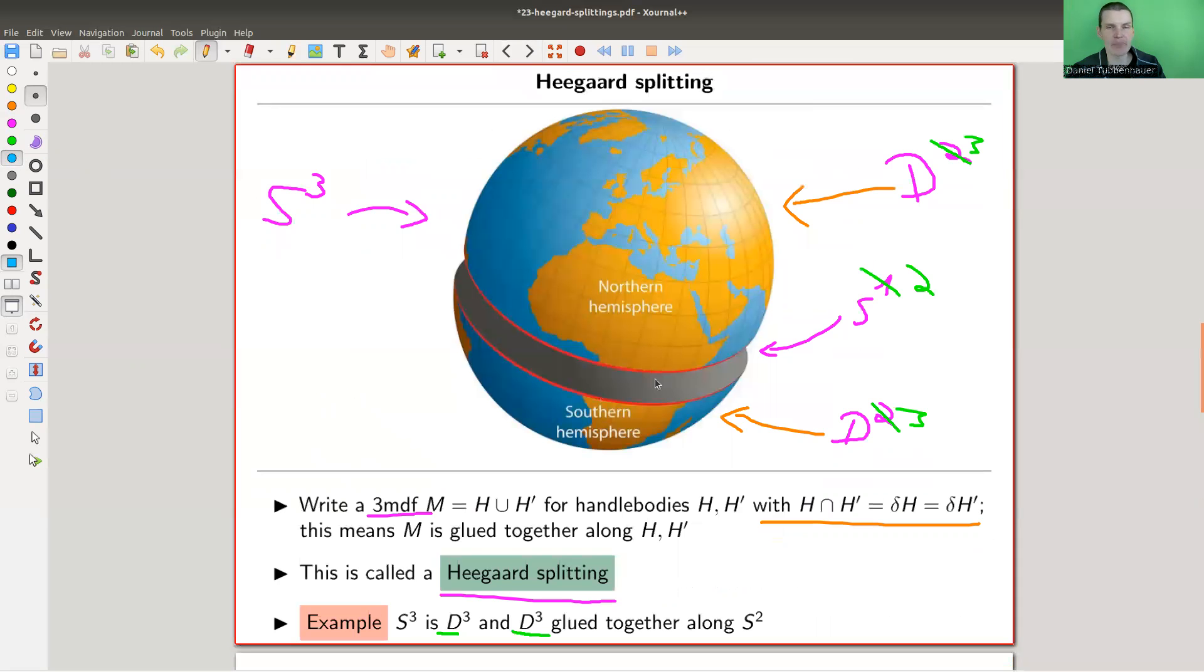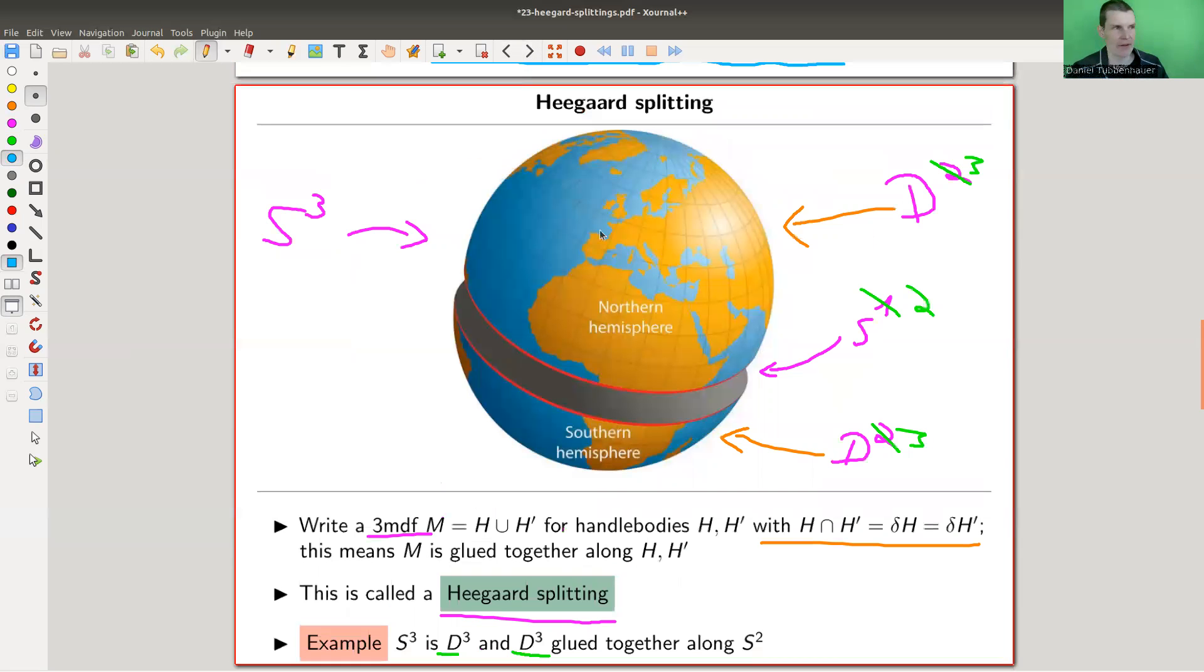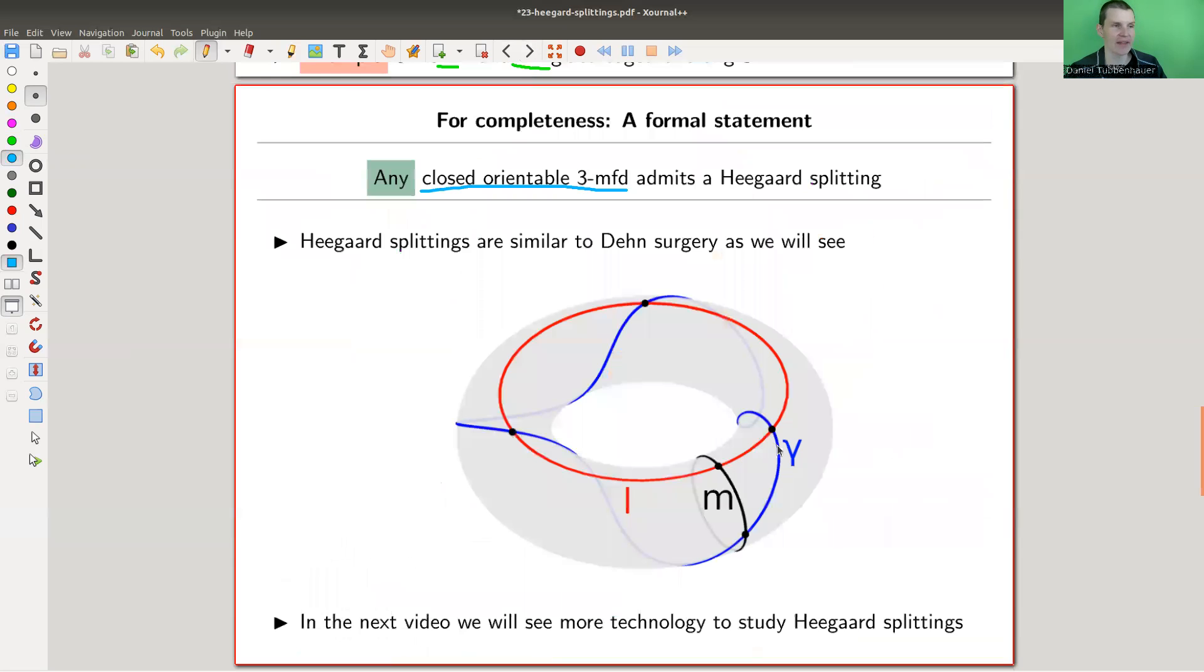So here, again, a little bit of a deceiving picture, because the pieces are very simple, and the gluing map is very simple. In general, the pieces could be complicated, but not too complicated. They are still just doughnuts. But the gluing can be very complicated, and we kind of need to understand the gluing.